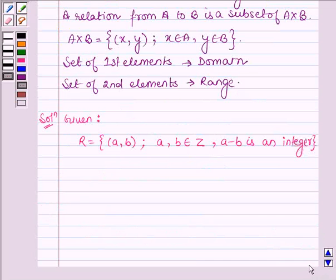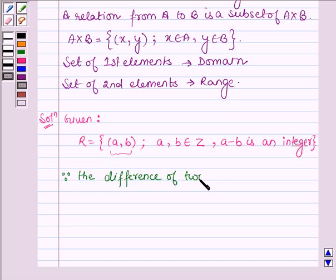The relationship between the first element a and second element b of the ordered pair in R is that a-b is an integer. Since the difference of two integers is always an integer,